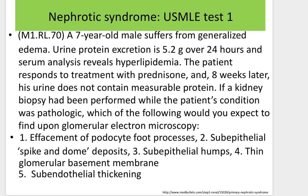USMLE Test 1: A seven-year-old male suffers from generalized edema. Urine protein excretion is 5.2 grams over 24 hours and serum analysis reveals hyperlipidemia. The patient responds to treatment with prednisone, and eight weeks later his urine does not contain measurable protein. If a kidney biopsy had been performed while the patient's condition was pathologic, which of the following would you expect to find on glomerular electron microscopy? Options: (1) effacement of podocyte foot processes, (2) subepithelial spike-and-dome deposits, (3) subepithelial humps, (4) thin glomerular basement membrane, (5) subendothelial thickening.